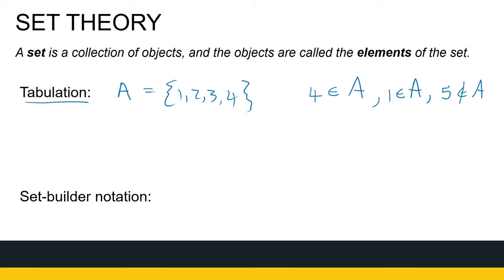I can also have a set B. In tabulation, I don't have to name them all. I can say 1, 2, 3, 4, carry on in the same way up to 10. This is still an example of tabulation because I can list all the elements in that set.